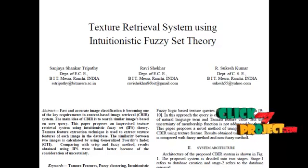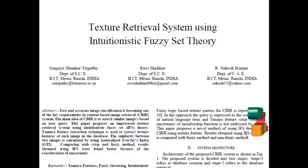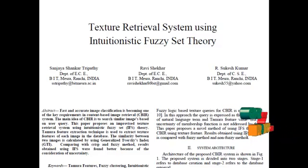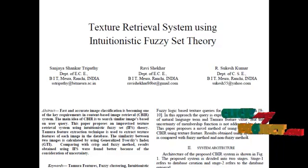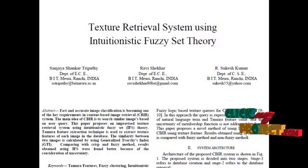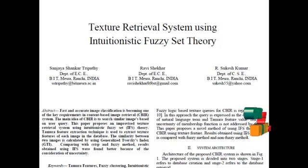The main idea of CBIR is to search similar images based on a user query. Here we are going to consider MRI scan images of the brain. Texture features play an important role in computer vision, image processing, and pattern recognition. We are going to mainly concentrate on the extraction of Tamura features from the given images.